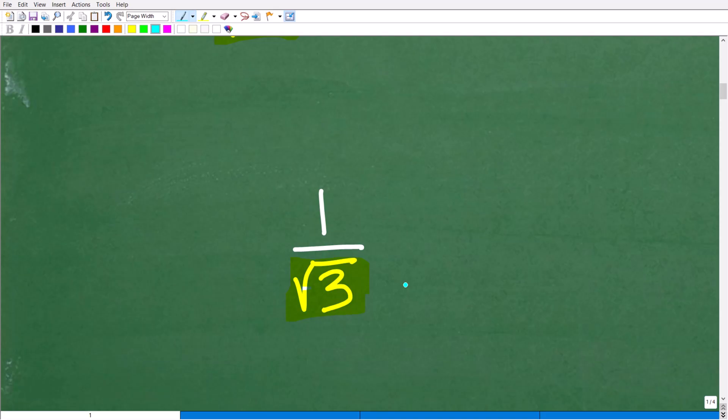Because what we're doing here is we're trying to divide a number by an irrational number. The square root of 3 is what we call an irrational number. Now, this number is a non-repeating, non-terminating decimal.